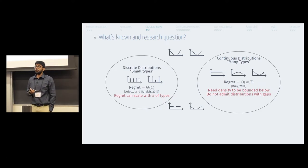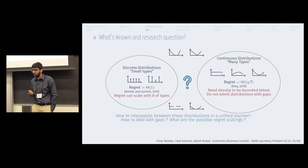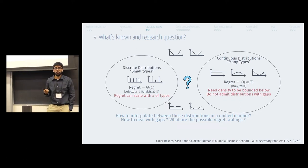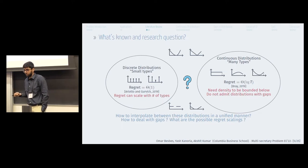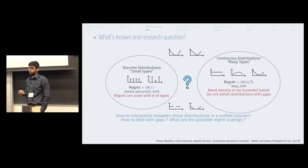Most practical problems are somewhere in between these two extreme classes of distributions. So the research question is: how do you interpolate between these two distributions in a unified manner? The algorithmic question is how to deal with gaps, and theoretically, what are the possible regret scalings for these classes of distributions?